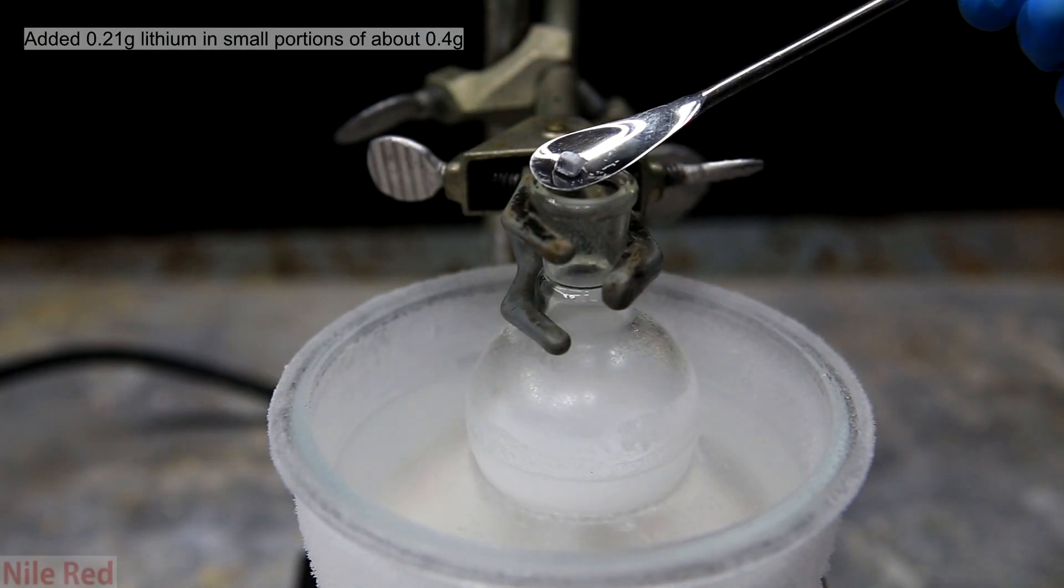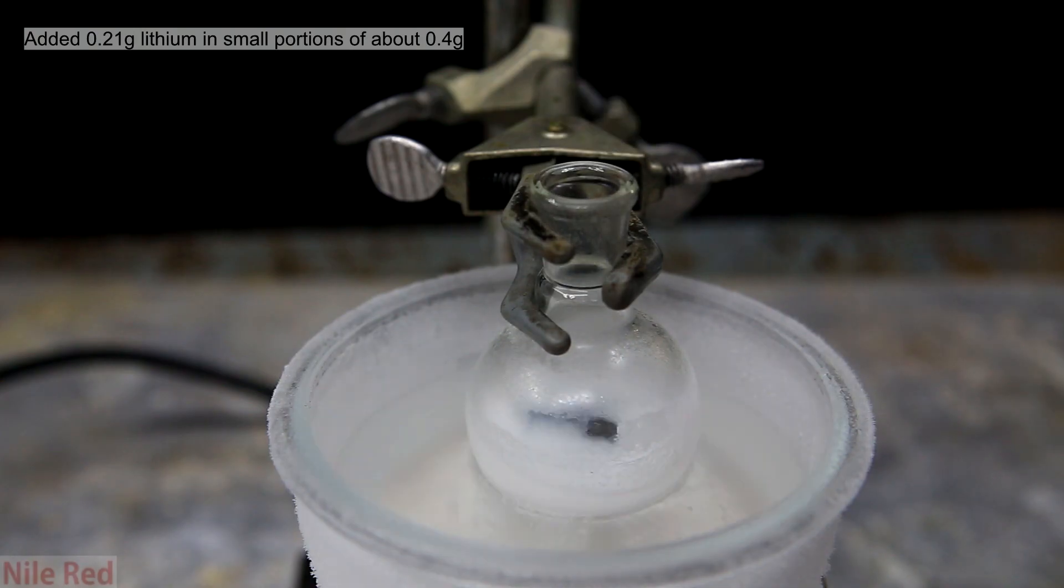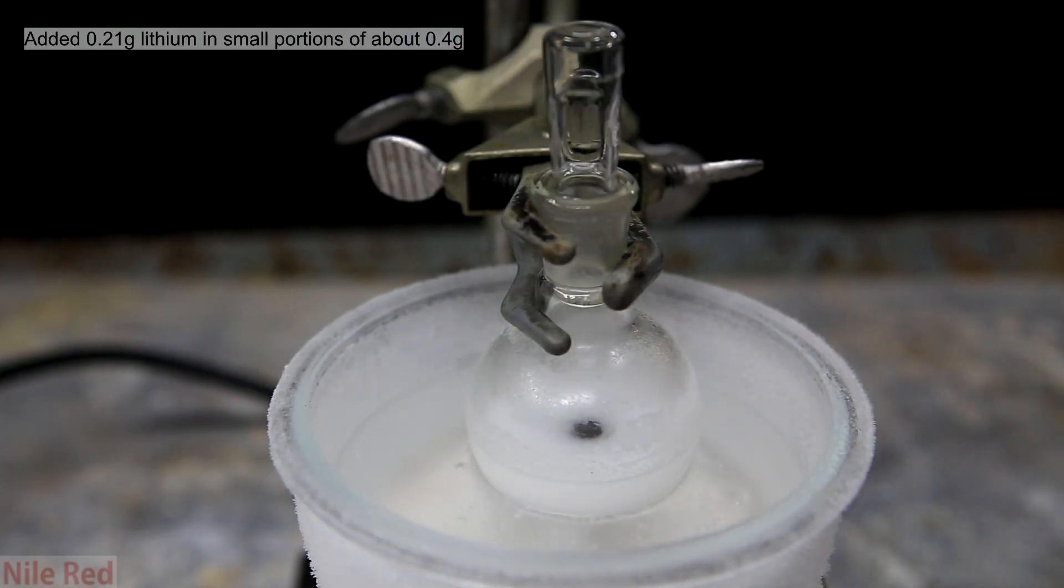This step is the one that will initiate a reaction and it's the addition of lithium. I added the lithium in small portions of about 0.04 grams each time. After adding the lithium you can see a blue color form which quickly takes over everything in the flask.